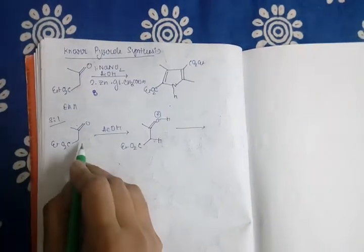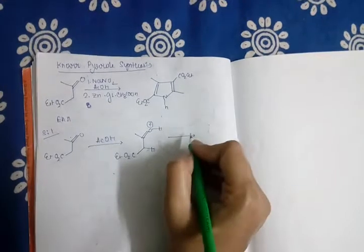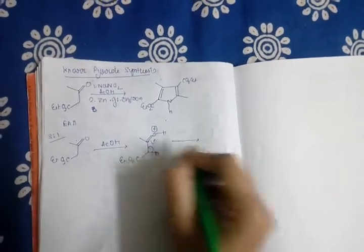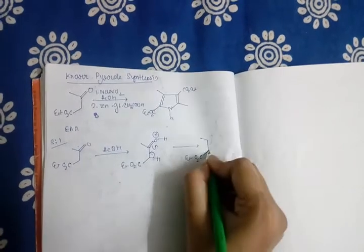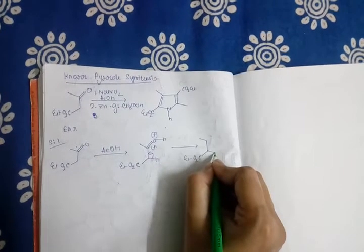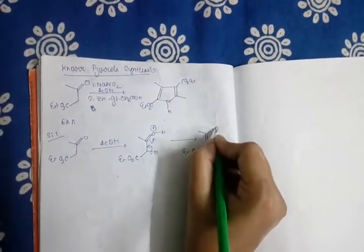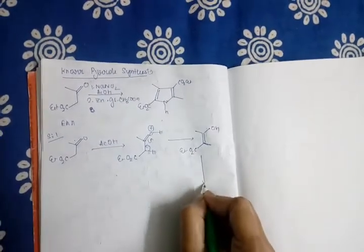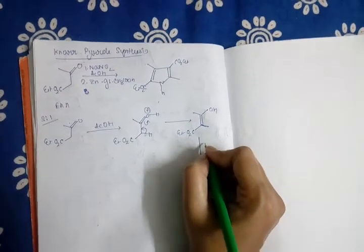In presence of acid, at first ethyl acetoacetate goes to its enol form, and then through its enol form it will add to an imine positive. From aniline and acetic acid, a nitrenium ion is generated in the medium.